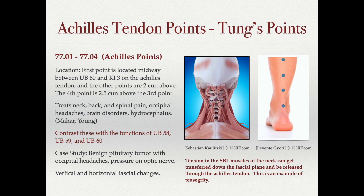Regarding the location of these points: the first point, 77.01, is located directly in the tendon between UB 60 and Kidney 3. The second point, 77.02, is two cun above that. The third point is two cun above that, and the fourth point is two and a half cun above the third point. We needle directly into the tendon.